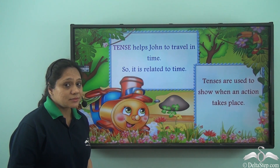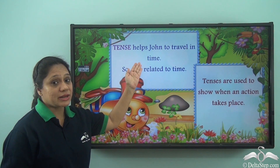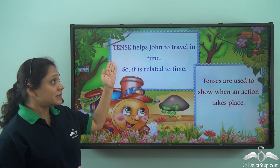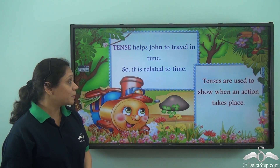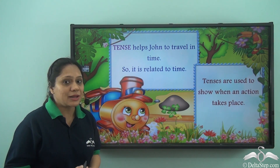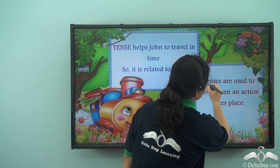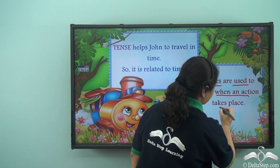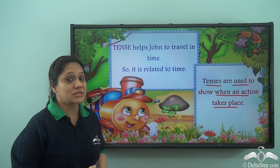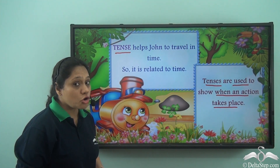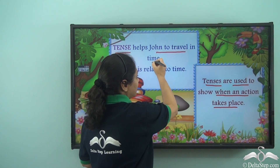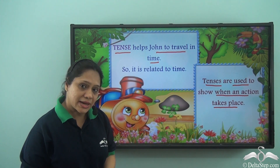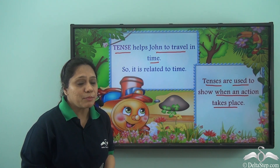So tense helps John to travel in time. You must have seen that the time machine had 'tense' written on it. So tense helps John to travel in time — it is related to time. Similarly, in the English language, tenses are used to show when an action takes place, just like the time machine. Let us learn something about tenses now.